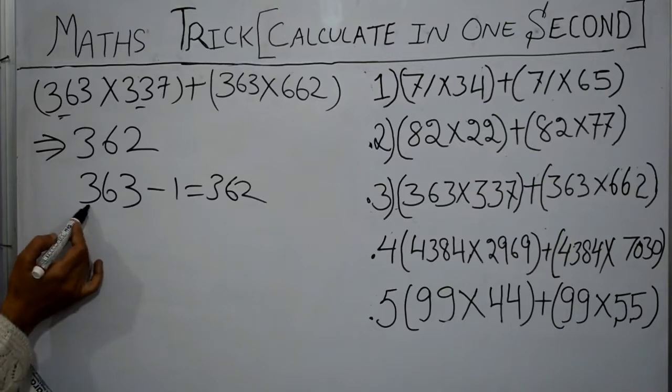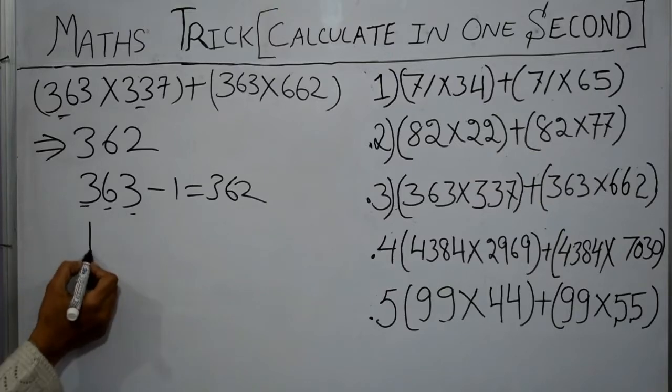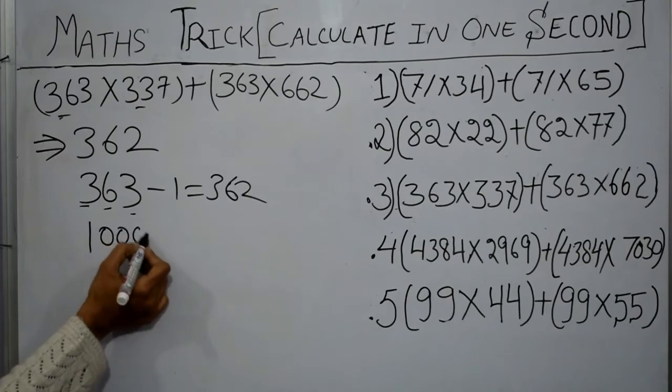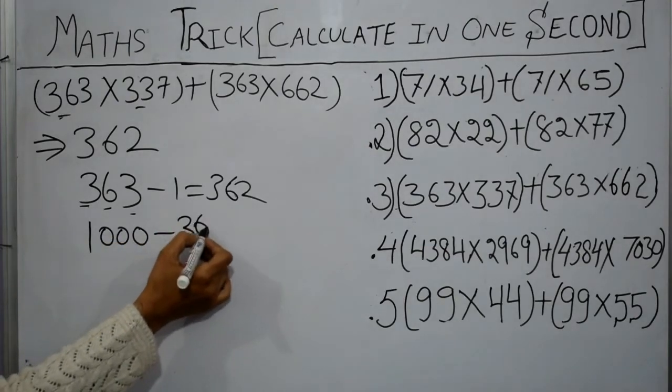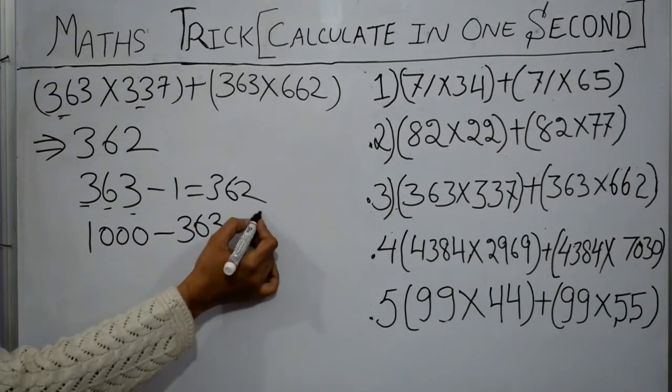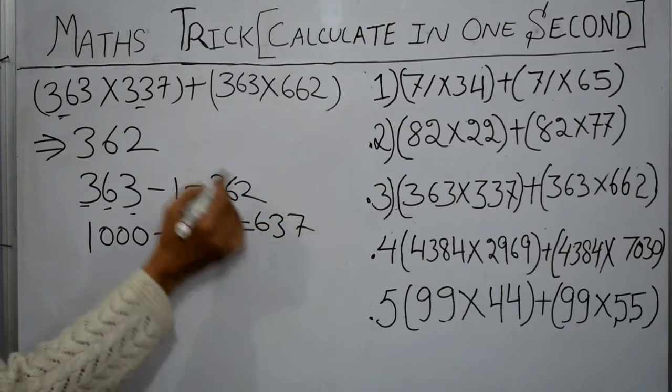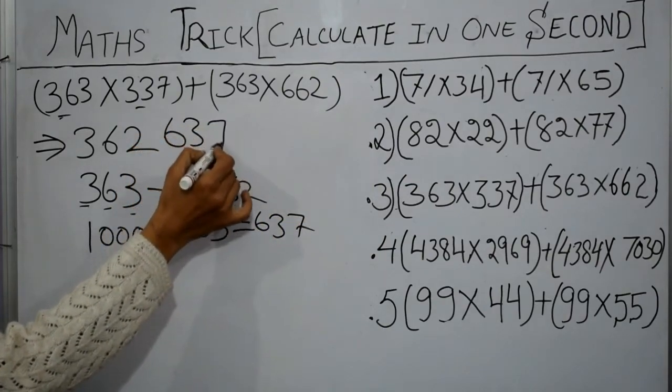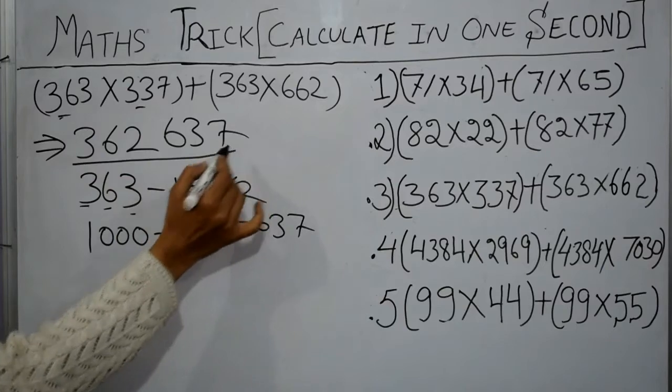Because these are three digits, now we will subtract from 1000. Subtract 363 from 1000, we got 637. Just write out 637 here and this is our answer.